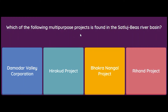Which of the following multi-purpose projects is found in the Satluj-Beas River Basin — Damodar Valley Corporation, Hirakud Project, Bhakra Nangal Project, or Rihand Project? The answer is Bhakra Nangal Project, located on the Satluj-Beas river. It is multi-purpose because it generates hydroelectricity and also helps in irrigation.